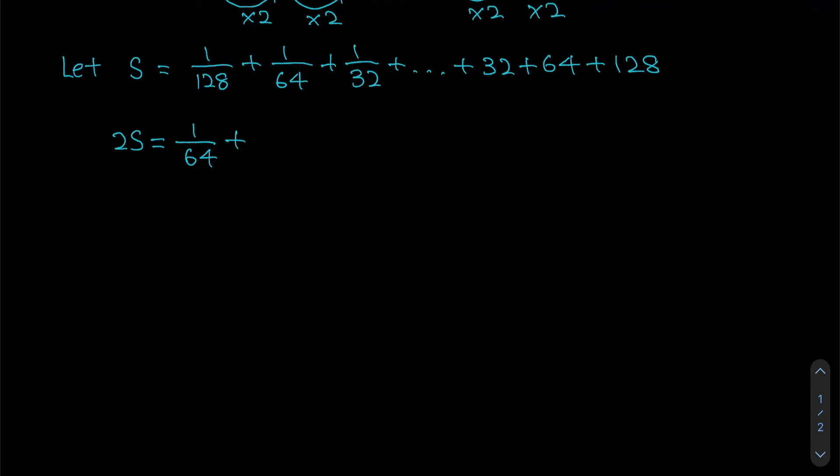So 1 over 128 will give you 1 over 64. 1 over 64 will give you 1 over 32. 1 over 32 will give you 1 over 16.